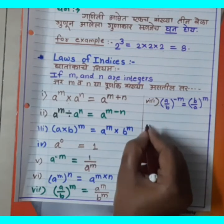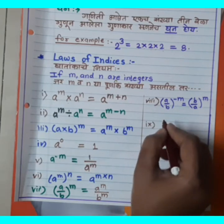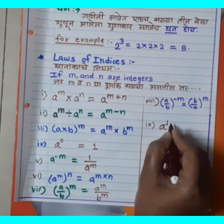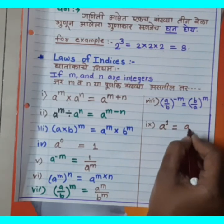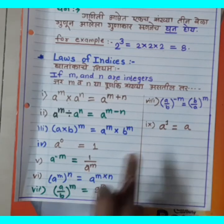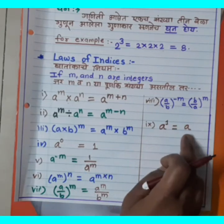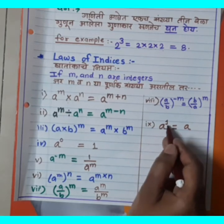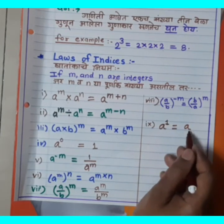Ninth Rule: A raise to 1 is always equal to A. Any number raised to the power 1 equals that number itself. A^1 = A.